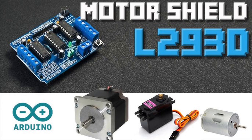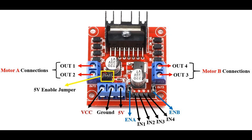For reverse rotation, activate Q2 and Q3 — the top right and bottom left transistors. When Q2 and Q3 are turned on, current flows in the opposite direction: from the power supply through Q2, through the motor in the opposite direction, then through Q3 to ground. This reverses the current flow through the motor, causing it to rotate in reverse. For braking (active low), activate Q1 and Q3, or Q2 and Q4 simultaneously — this shorts the motor terminals, stopping the motor quickly. When all transistors are turned off (high impedance state), no current flows through the motor, allowing it to coast to a stop.